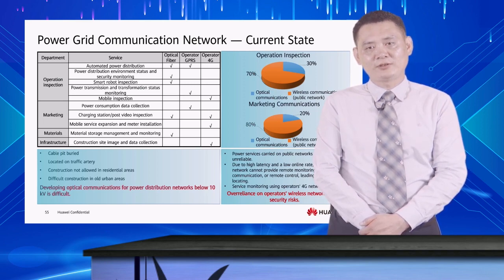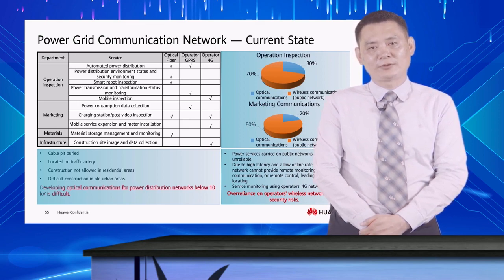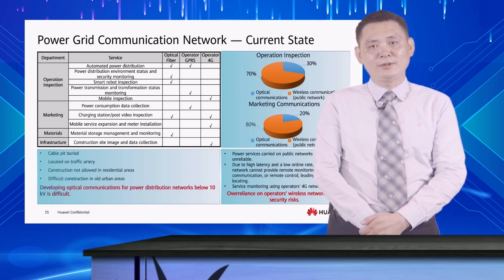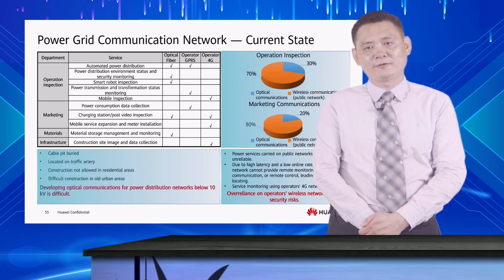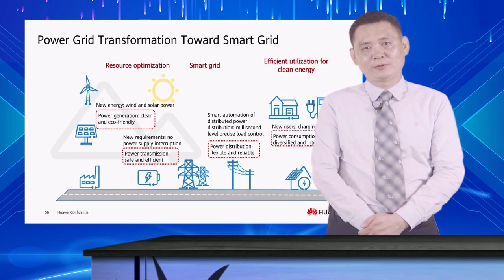In addition, GPRS services on the public network result in long latency and low online rate, and cannot support the three control functions: telemetry, remote communication, and remote control. Despite the feasibility of utilizing 4G networks for monitoring services, the costs are high. To sum up, some key services of the power grid communication network still use optical fibers; however, a large number of services also use operators' public networks, leading to security and reliability risks. Traditional power grids are developing towards smart grid.